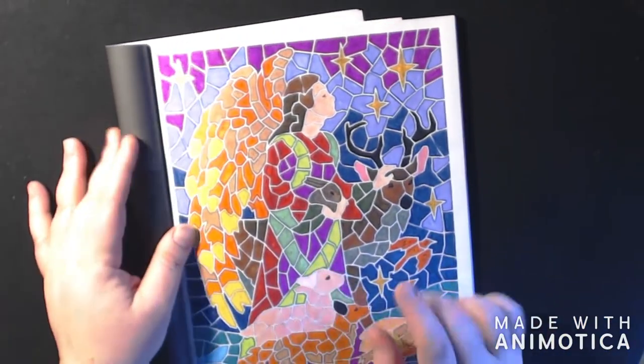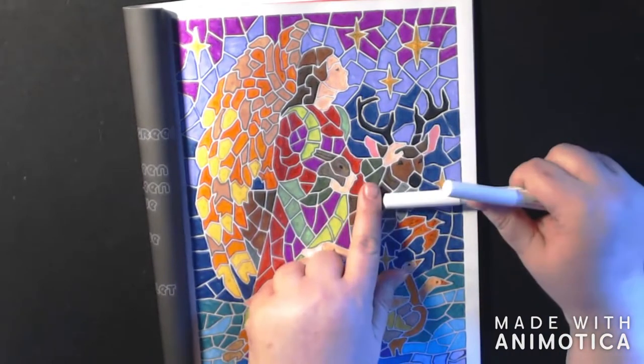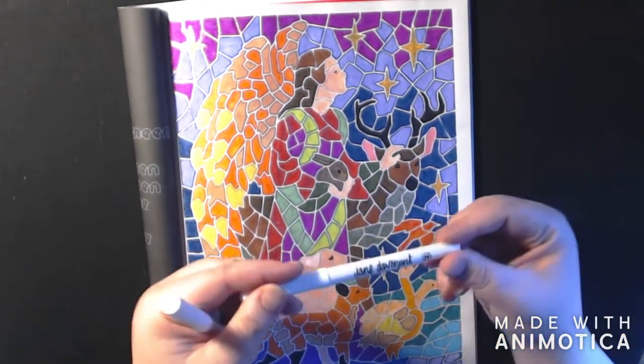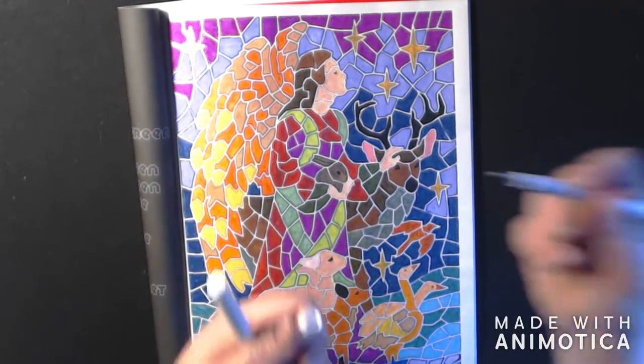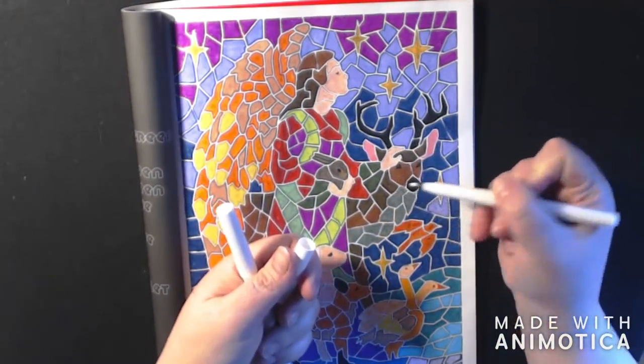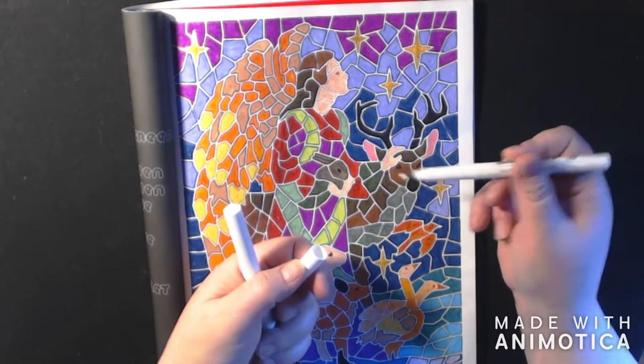What I like about the mosaics is if you mess up and go over the white line, you can use these Jane Davenport paint-over pens. It's white and it'll go right over any color. If it's a really dark color, you might have to go over it a couple times.